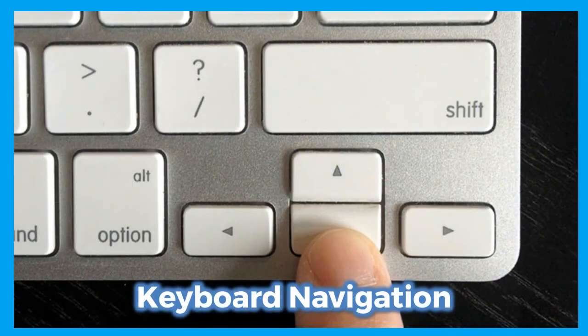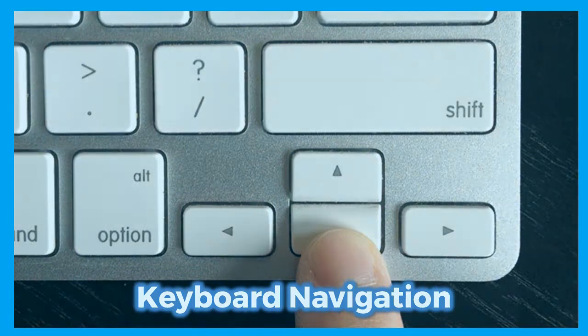Now, there are three types of keyboard navigation: caret, spatial, and tabbing navigation. Caret navigation is moving using the cursor. Spatial navigation is moving to the next focusable item with the help of arrow keys or tab. And when it is done through tab, it is called tabbing navigation.